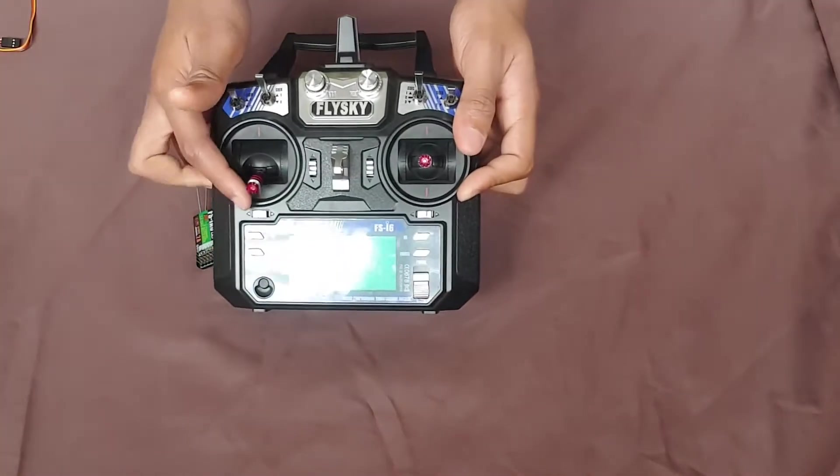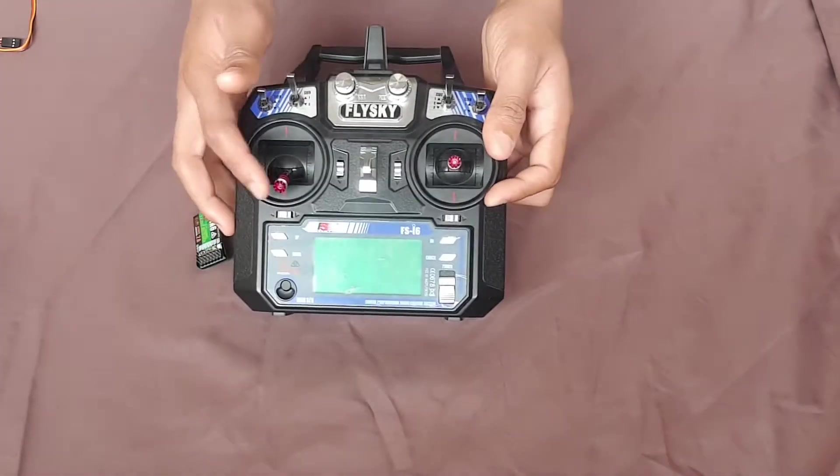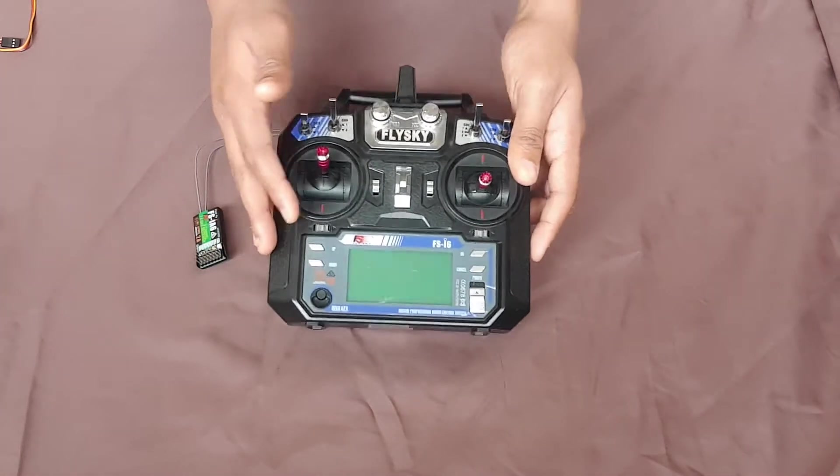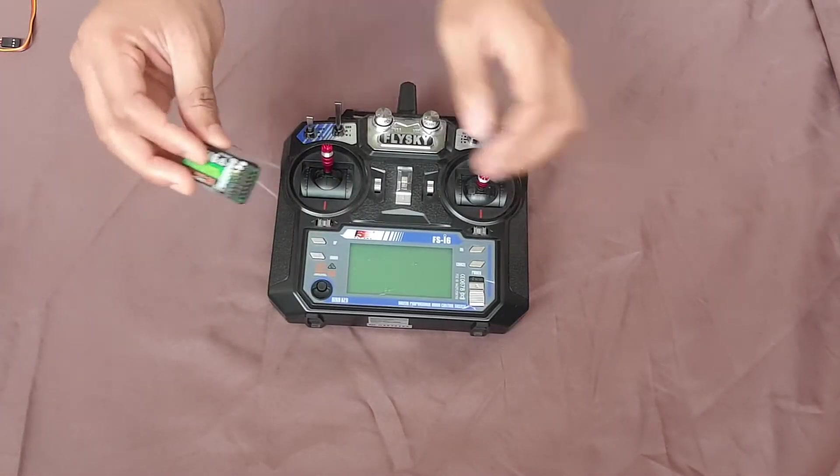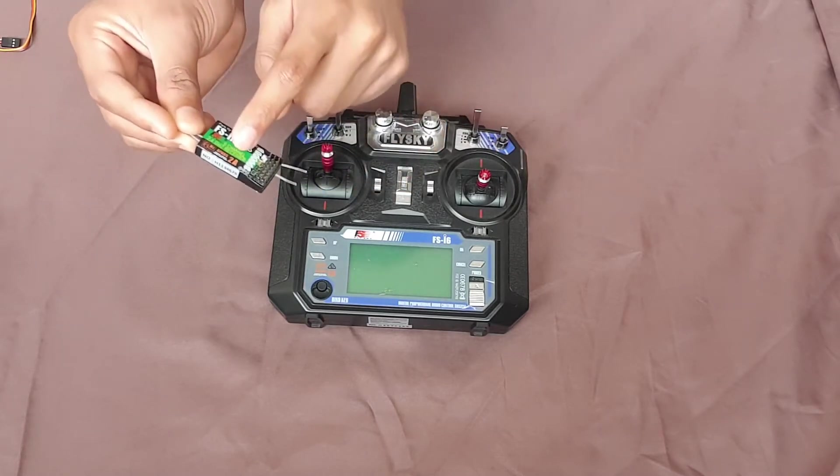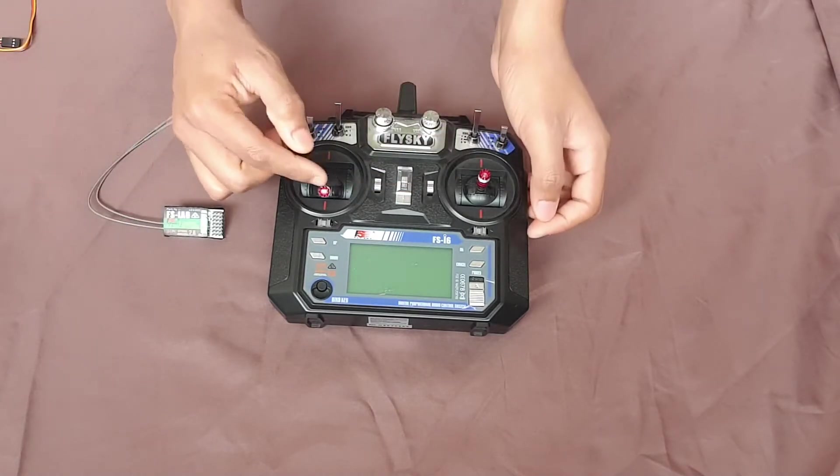Now, this is your radio transmitter and you're basically gonna control your plane with this machine and this is gonna send signals to a thing called receiver. This receiver is going to receive the signals that you're gonna control with the transmitter.